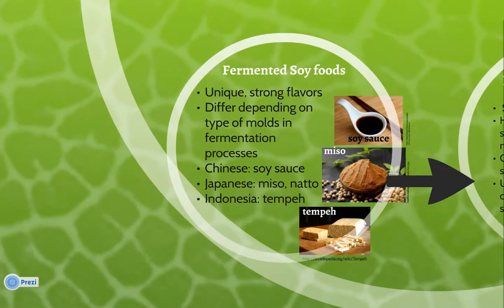Fermented soy foods are valued for their unique strong flavors, which differ depending on the types of molds used in the fermentation process. Some examples of traditional fermented soy foods are soy sauce, miso, natto, and tempeh. The Chinese invented soy sauce thousands of years ago, and it is a liquid that is removed from the molded paste, and it is used as a flavorful sauce.